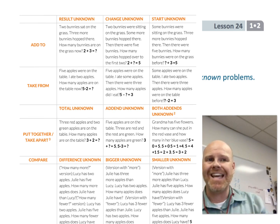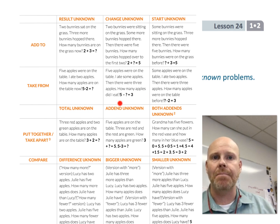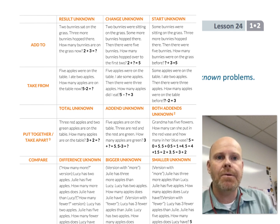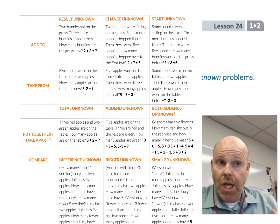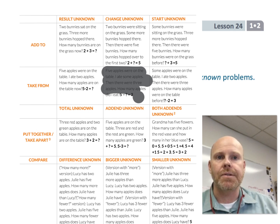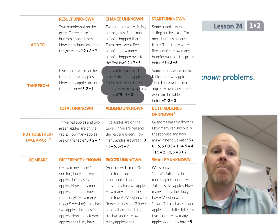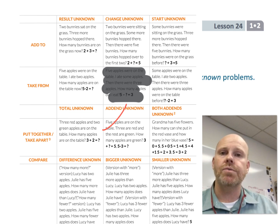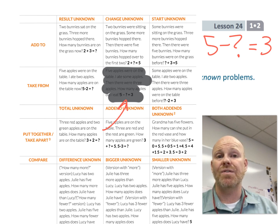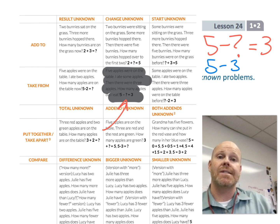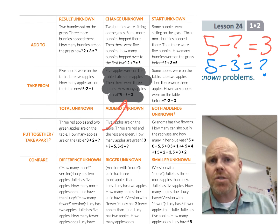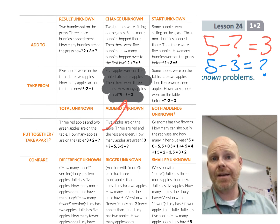Today, we're going to be talking about the 'take from with change unknown.' What does that mean? The example would be like: five apples were on the table, I ate some apples — there's our change unknown — then there were three apples. How many apples did I eat? The problem would be five minus something equals three. We want students to recognize this kind of problem, and ultimately recognize that five minus three gives us that missing change unknown. At this point, we're just allowing students to draw pictures and come up with their own strategies.